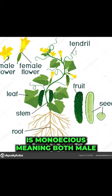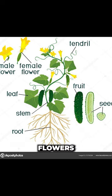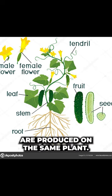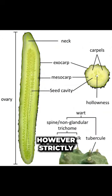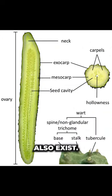Generally, each plant is monoecious, meaning both male and female flowers are produced on the same plant. However, strictly female, male, and seedless varieties also exist.